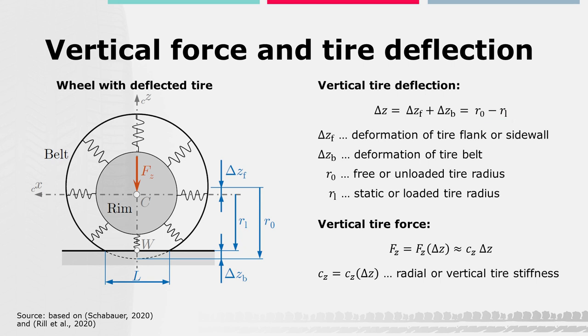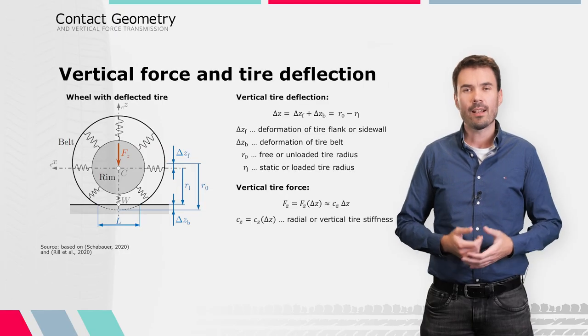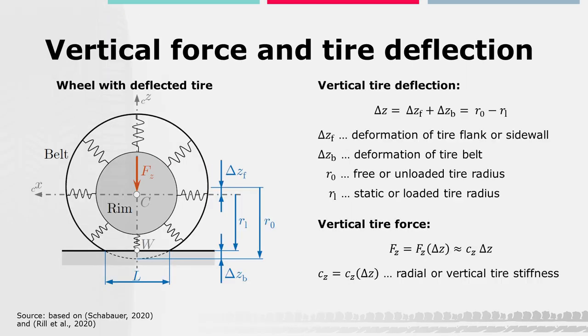The vertical tire contact force, which counteracts the wheel load, is a function of this deflection. Simplified, it can be described as the product of the overall vertical stiffness of a tire CZ and the deflection delta Z.